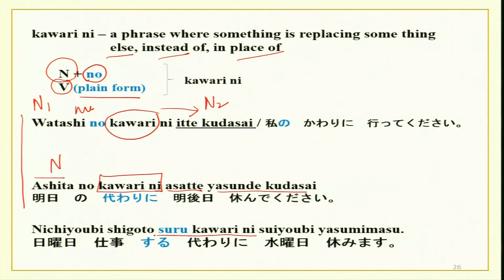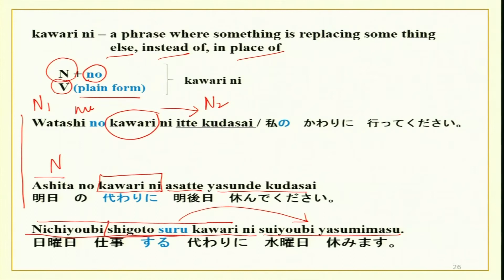With verbs, use the plain form plus kawari ni: nichiyoubi shigoto suru kawari ni — as I am going to be working on Sunday — suyoubi ni yasumi wo totte kudasai — please take a holiday on Wednesday. Please remember: always use plain form with verbs before kawari ni. Kawari ni is used like this.